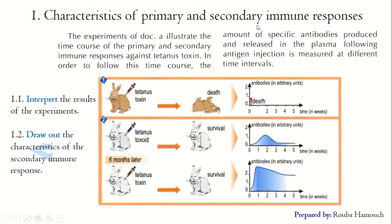What are the characteristics of primary and secondary immune responses? The document illustrates the time course of primary and secondary immune responses against tetanus toxin. We have a rabbit injected with tetanus toxin and another rabbit injected first with tetanus toxoid — the attenuated form of tetanus toxin — then with tetanus toxin. The attenuated toxin has lost its pathogenic effect but still retains its antigenic effect or epitopes.